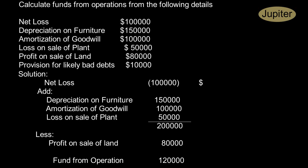Less profit on sale of land - similarly, this is also related to fixed assets. We have deducted it from net loss because it is profit on sale of land. Fund from operation $120,000. This is how we arrived at fund from operation.